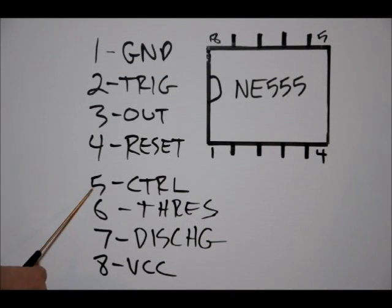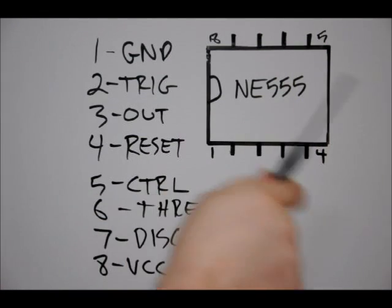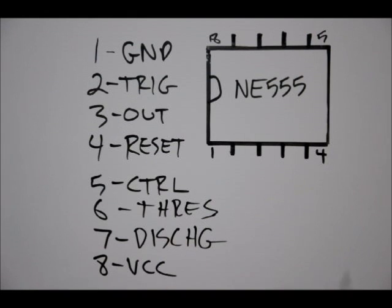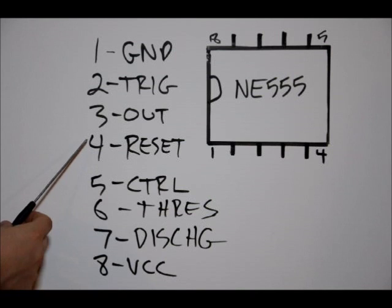VCC, our power supply pin, is pin eight. In our project later when we do a lab, it's going to be five volts. Discharge and thresh work together to determine the length of the pulse, and of course we have to actually add in some passive components, a resistor and a capacitor. Control, I'm not going to use this pin for this application. I would use it for high frequencies in astable mode, because the 555 timer can also be used to create pulses like on its own. It's like an oscillator, a square wave oscillator.